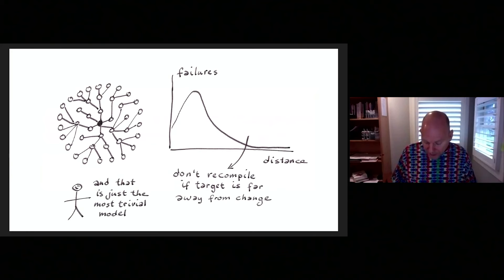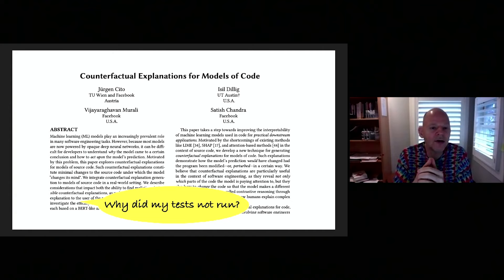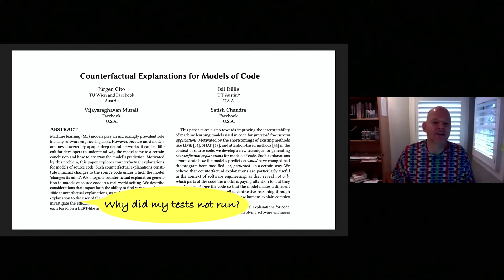There's a whole body of literature on automated test selection. One key thing developers want when using machine learning in the workflow is to understand why the model makes certain decisions. That's some newer research we're doing — having models explain why they made certain decisions. This explainability is very important for developers to accept and trust this kind of work.